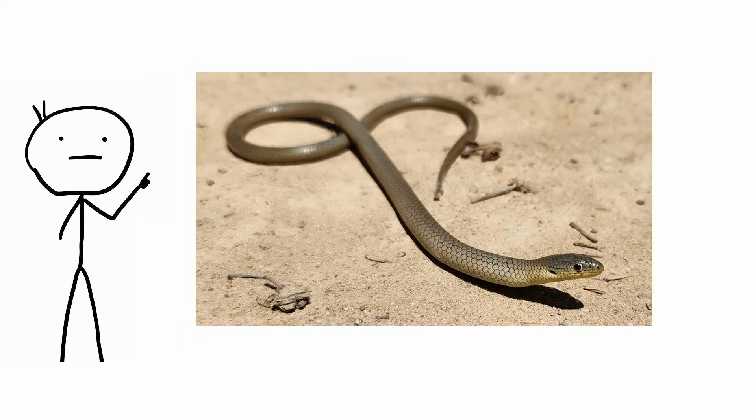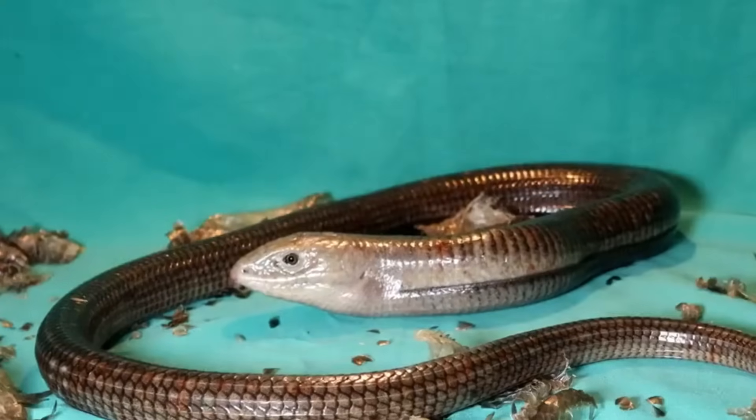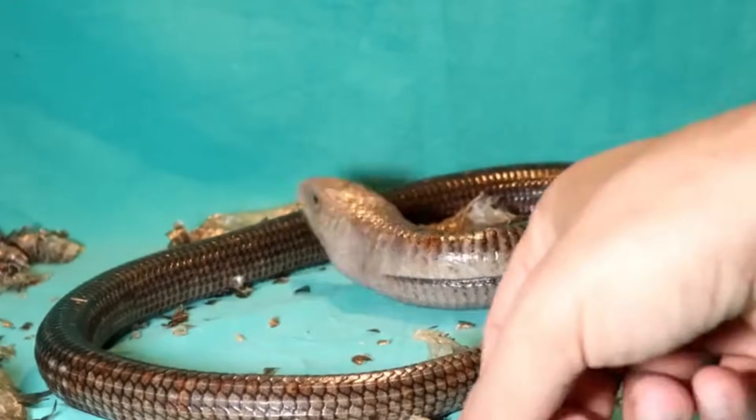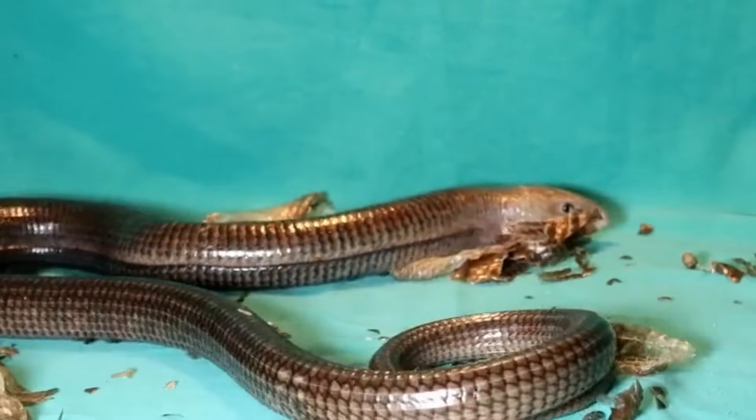Lizard snakes. If there's one thing we know about lizards, it's that, unlike snakes, they have legs. Well, we were all wrong. Native to North America, the glass lizard looks exactly like a snake, but is, in fact, nothing more than a long, legless lizard.